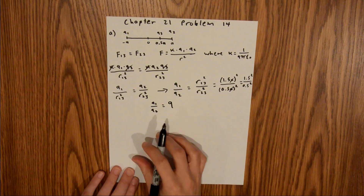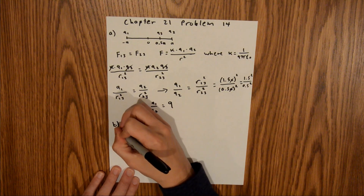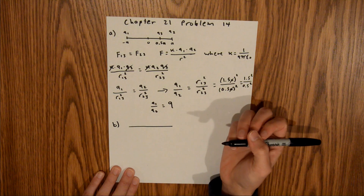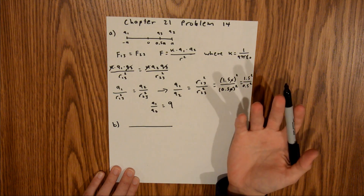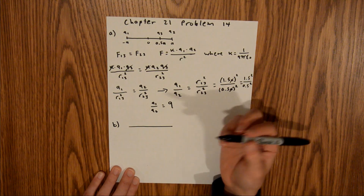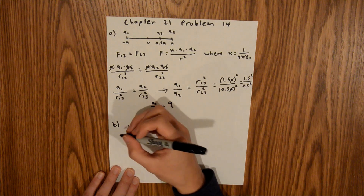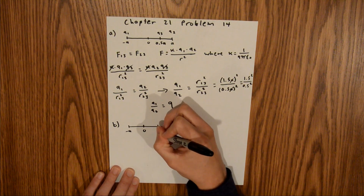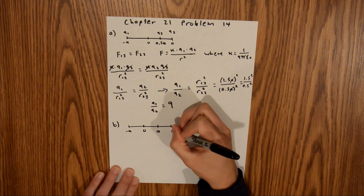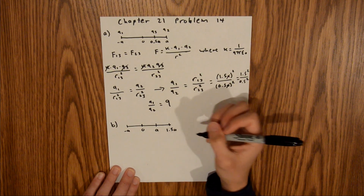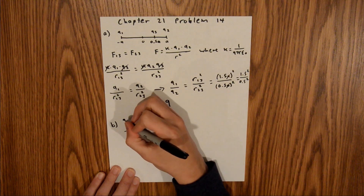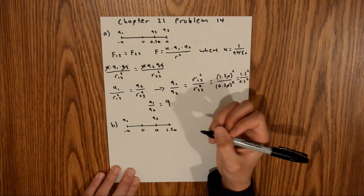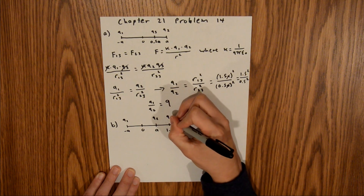Now for part b, I'll start again by drawing a picture, very similar to part a except the charges are at different distances. We have negative a, zero, a, and 1.5a marked on the line. q1 is at negative a, q2 is at a, and q3 is at 1.5a.